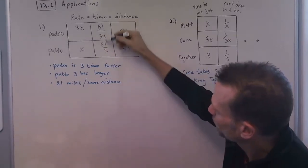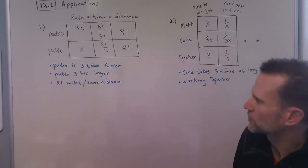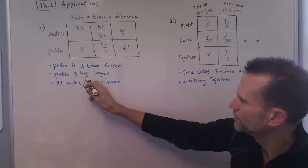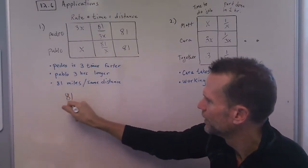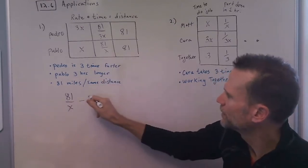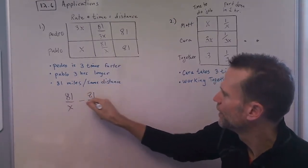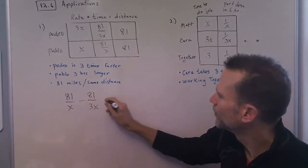Now both of these represent time, and it says that it takes Pablo three hours longer. So we can put Pablo's time up front and then subtract Pedro's time, so we have the longer time minus the shorter time equals the difference in time.